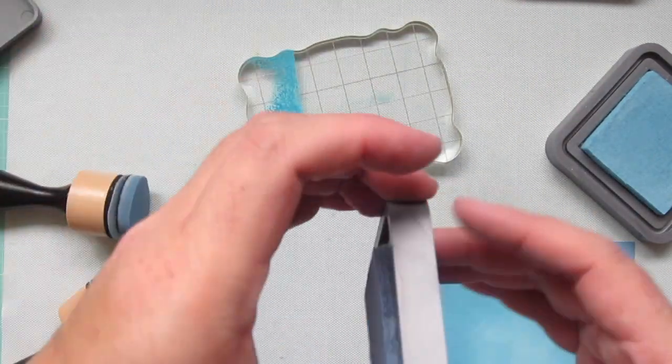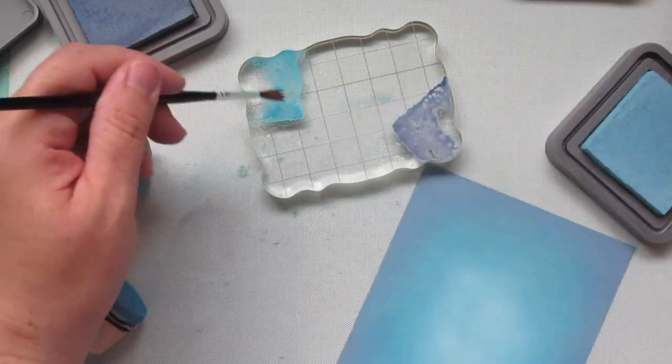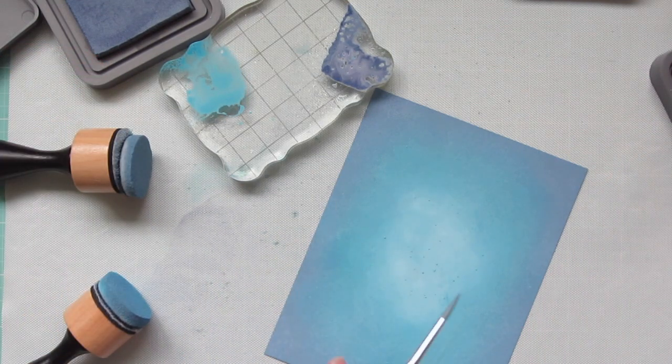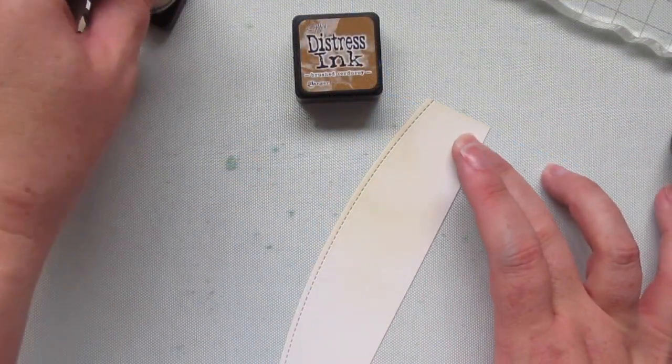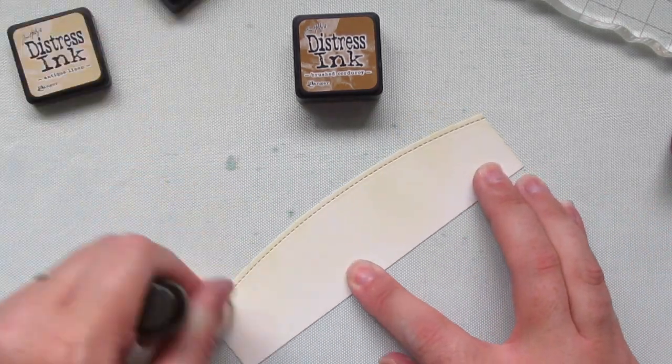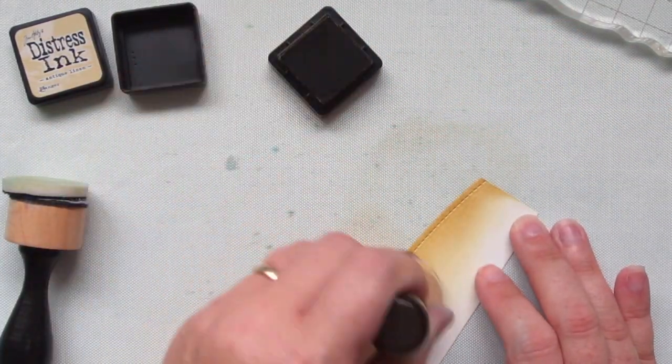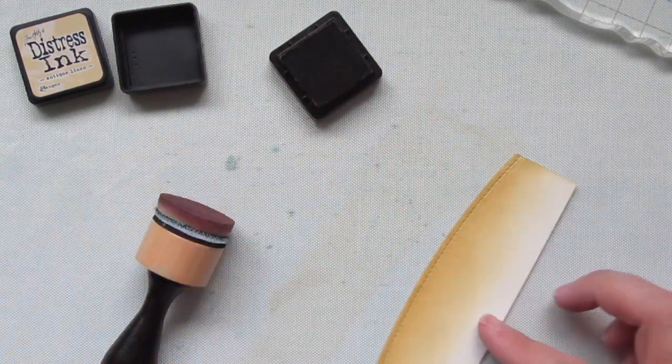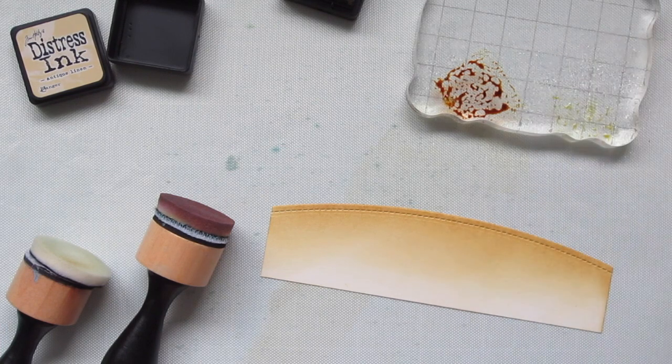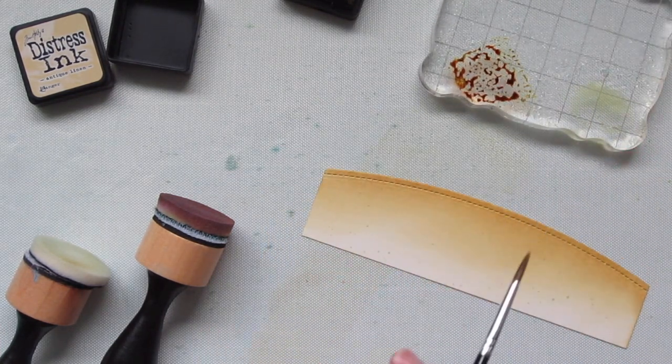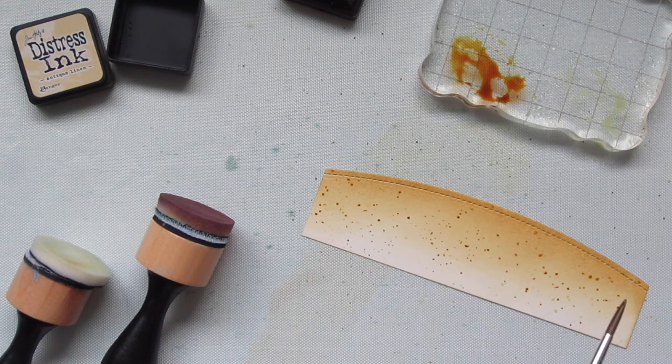I'm going to grab an acrylic block and tap on some of the Broken China and Stormy Sky Distress ink. I'm going to water that down a bit with my Distress Sprayer. And then pick that up with a paintbrush and tap it all over the background to create some nice little dots. Then I'm going to create a sandbar using another piece of cardstock and the Lawn Fawn Simple Stitch Hillside Borders. And I'm sponging on Antique Linen and Brush Corduroy Distress Ink. And I'm sponging that on from the top down so that it accentuates that stitching line. And then I'm going to do the same thing by just tapping some ink onto an acrylic block and watering that down and then creating some speckle detail. And then I'll set all of these panels aside to dry.